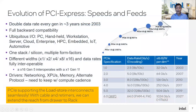Let's look at the evolution of PCI Express, the underlying interconnect technology driving different types of load-store IO interconnect. PCI Express debuted in 2003 with the 1.0 specification. We doubled the data rate each generation while maintaining full backward compatibility. Since PCI Express has been evolving in a cost-effective, scalable, power-efficient, and fully backward-compatible manner, it has become the ubiquitous IO across the compute continuum — everything from PC, handheld, workstation, server, cloud, enterprise, HPC, embedded, IoT, automotive. You have one stack, one silicon, capable of working seamlessly across multiple form factors across the entire compute continuum.